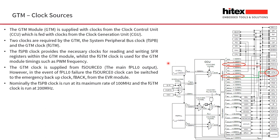The source clock for clocking operations within the GTM module is the clock generation unit, which nominally provides frequencies of 300 MHz from the digital phase-locked loop. FPLL0 is normally derived from the main oscillator module which runs at either 20 or 25 MHz and multiplies the frequencies up to 300 MHz. In the event of a problem with the digital phase-locked loop, software can automatically switch in a backup oscillator provided from the EVR sub-module, nominally around 100 MHz.